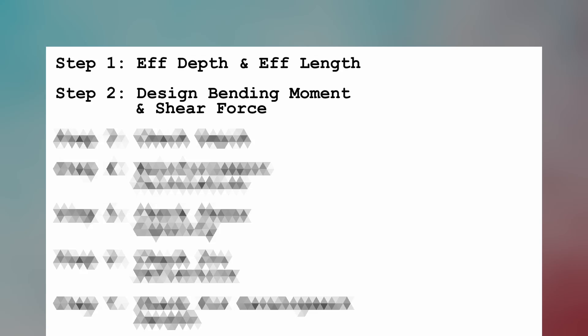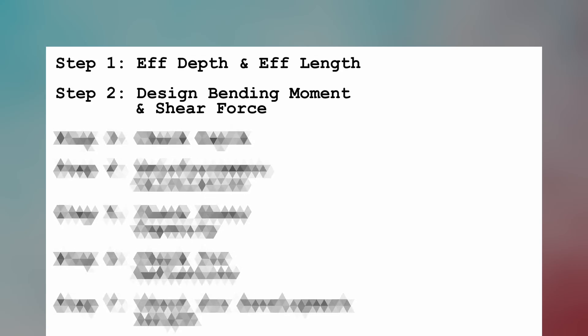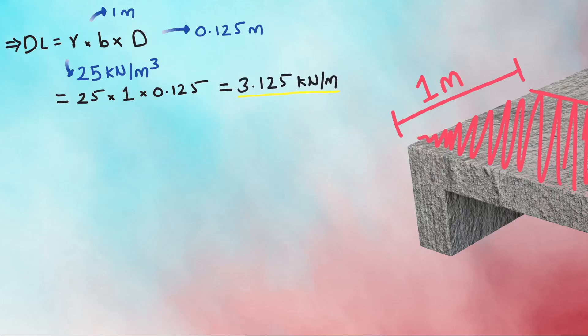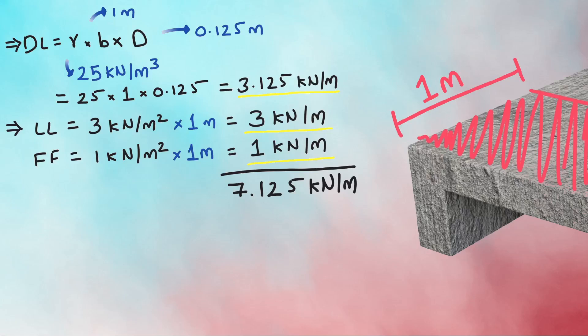Step 2 is calculating the design bending moment and design shear force. Assuming the slab to be a 1 meter wide strip, the total dead load will be gamma into B into total depth D, that is 25 kN per meter cube, which is the density, into 1 meter width into 0.125 m. So the total dead load becomes 3.125 kN per meter. Let's assume live load to be 3 kN per meter square and floor finish as 1 kN per meter square. Since we are considering only 1 meter strip, we multiply both by 1, giving live load of 3 kN per meter and floor finish of 1 kN per meter. Adding all of them gives total UDL of 7.125 kN per meter, and factoring the load by 1.5 gives total factored UDL as 11 kN per meter.